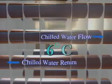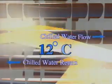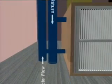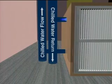The heat absorbed by the chilled water raises its temperature from 6 degrees Celsius to around 12 degrees Celsius. The 12 degrees Celsius chilled water, after leaving the cooling coil, is returned to the chiller at the central plant room.